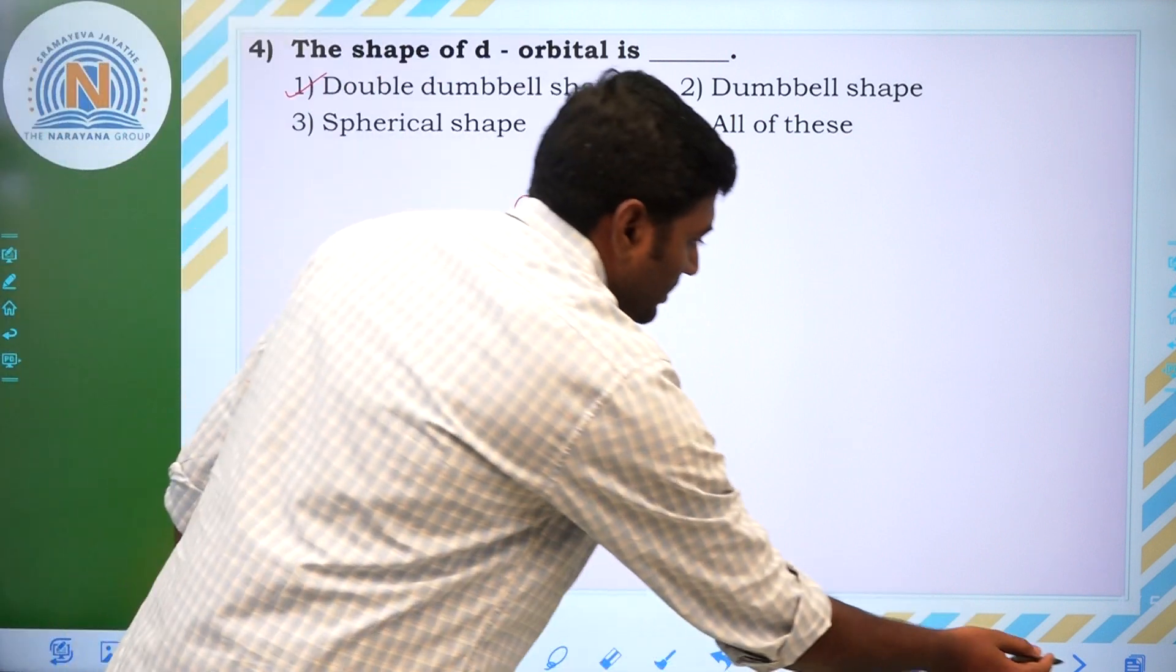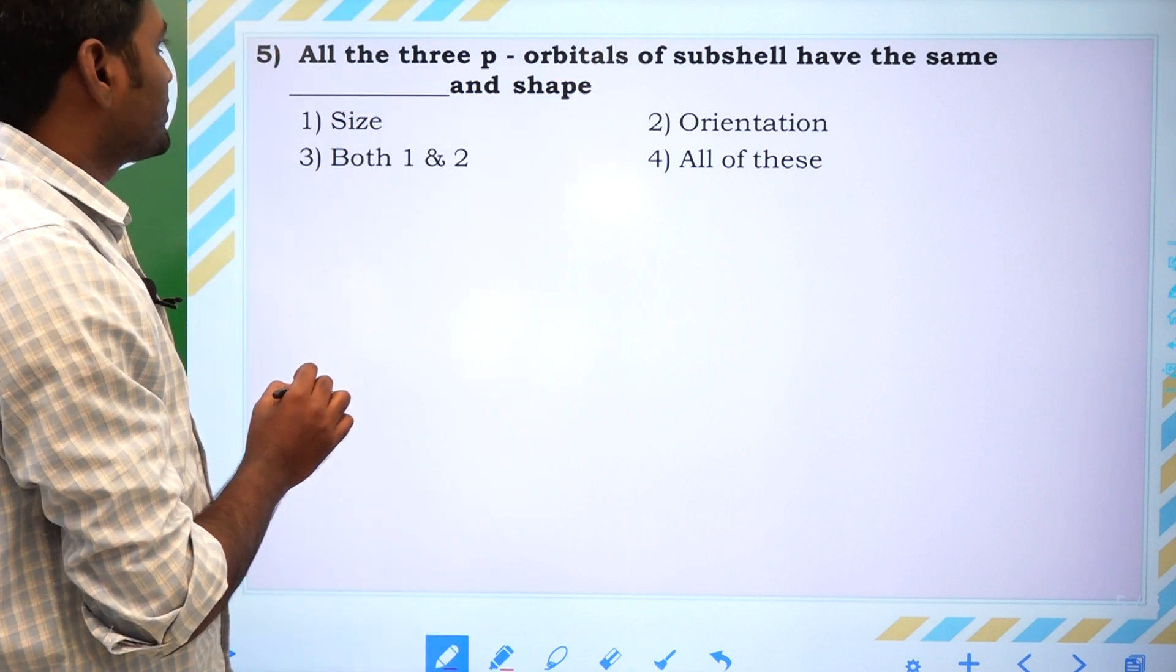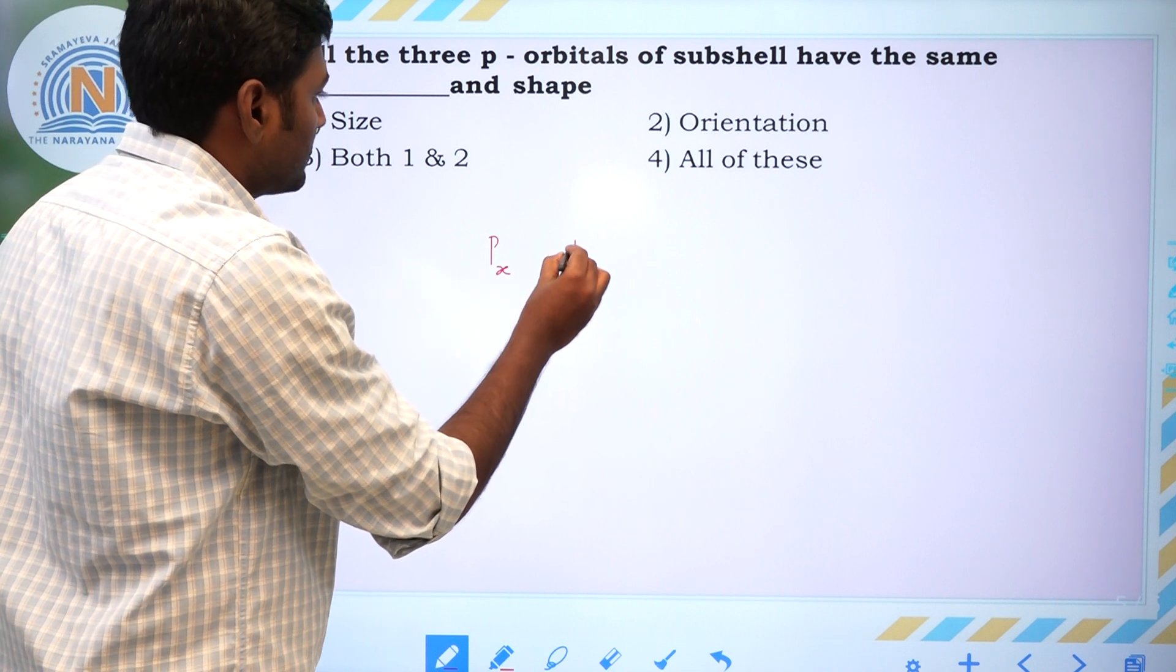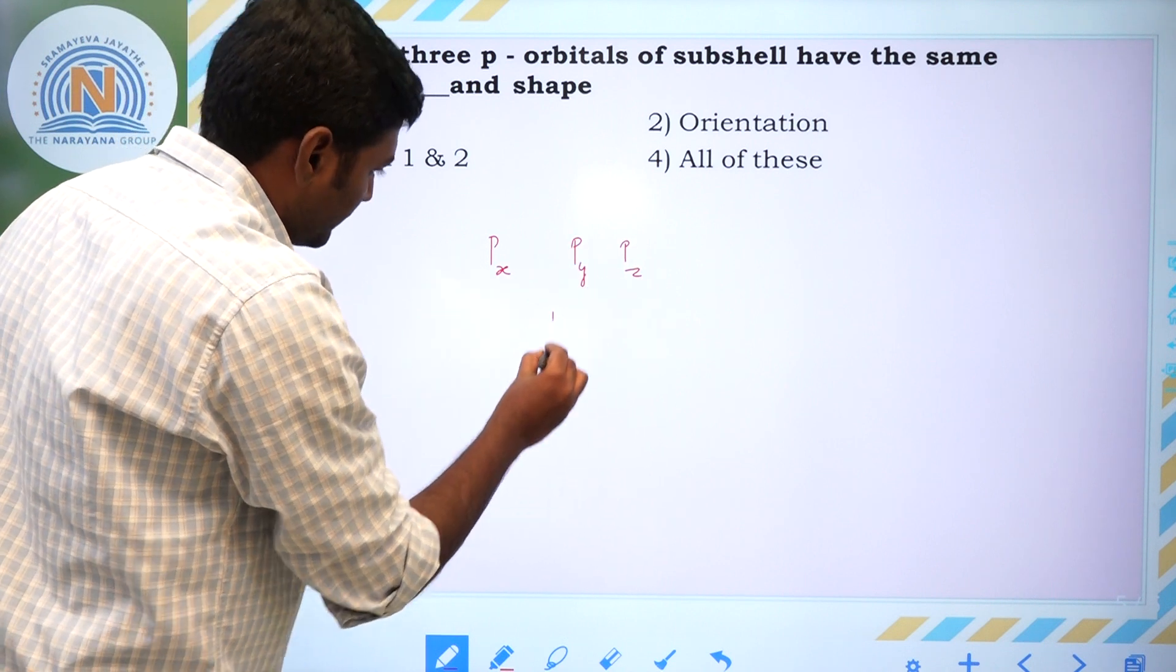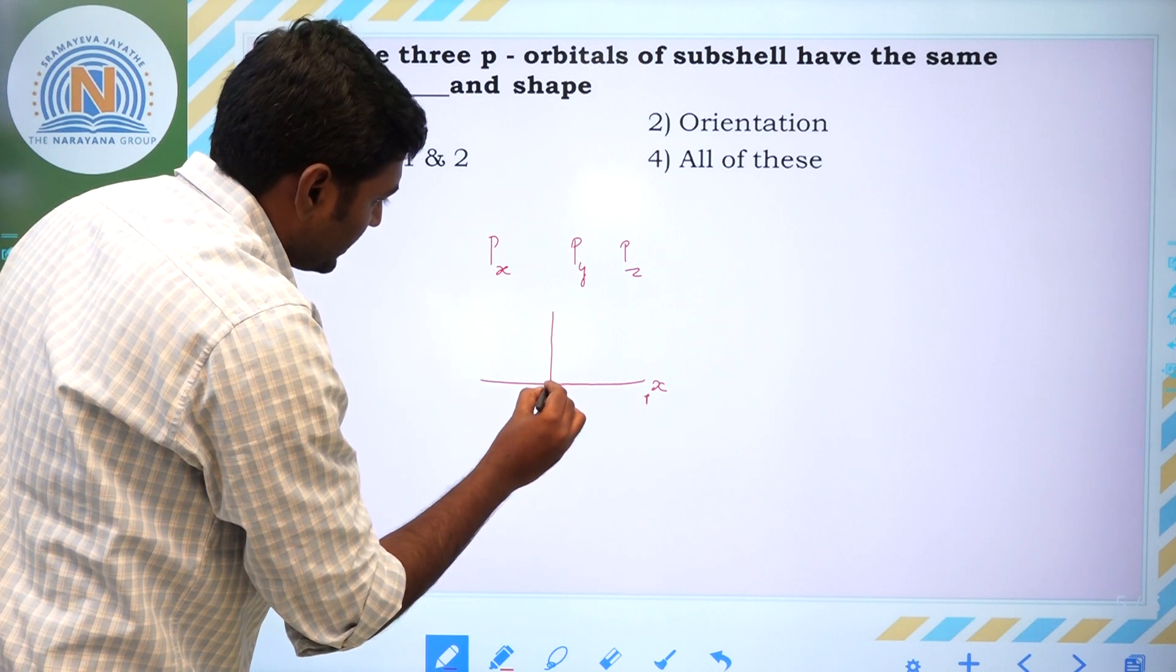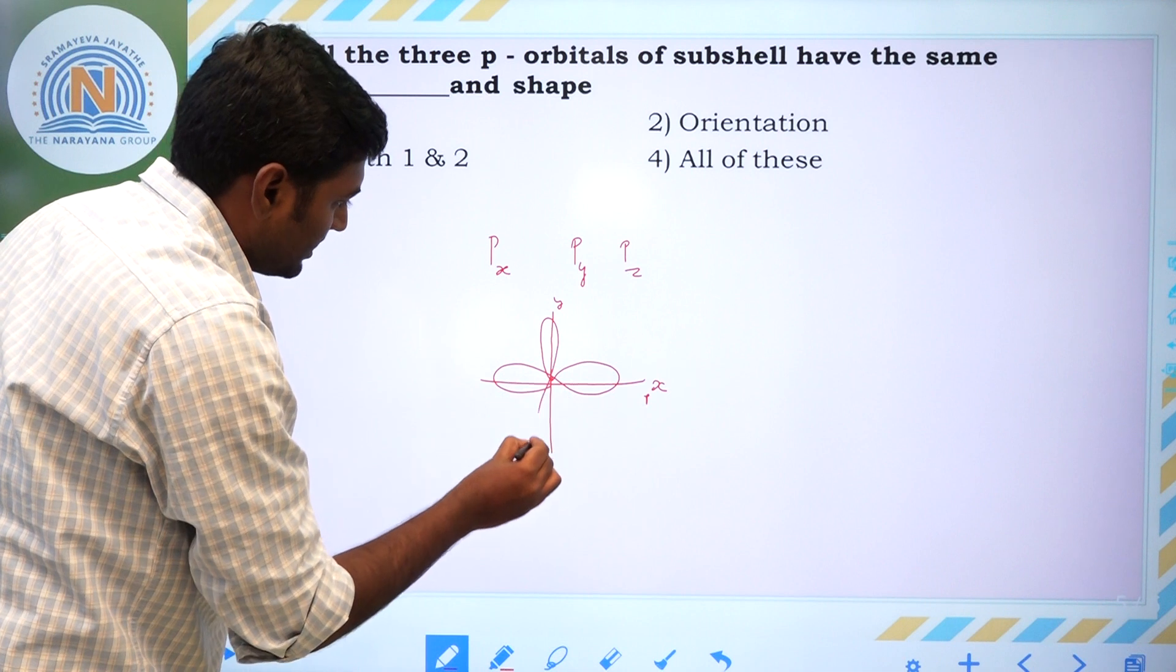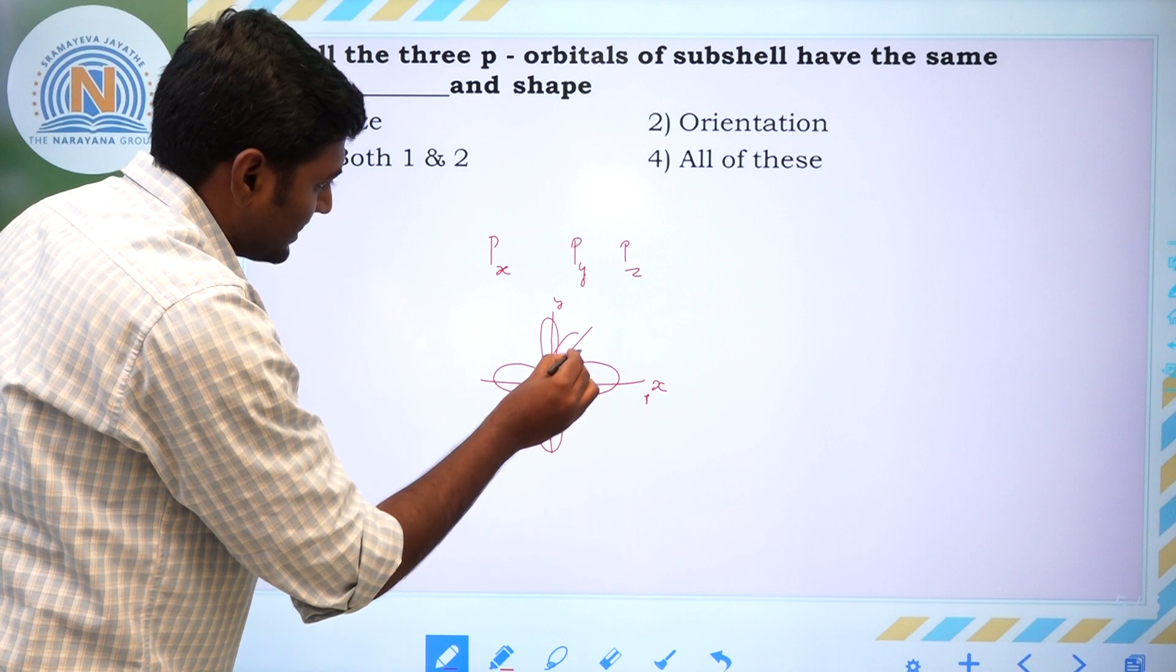Next we will go for next question. All of the three P orbital shape. All of the three P orbitals have saved, dash and dash. If you see P orbitals, PX, PY and PZ. First one, it is PX. PX is like this. And it is Y axis. PY is like this. And if you go for PZ, PZ is like this.